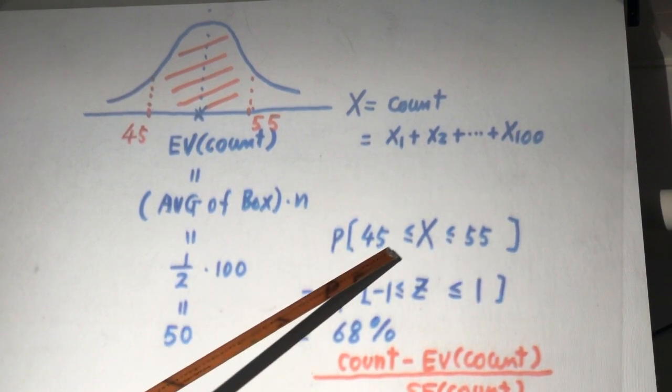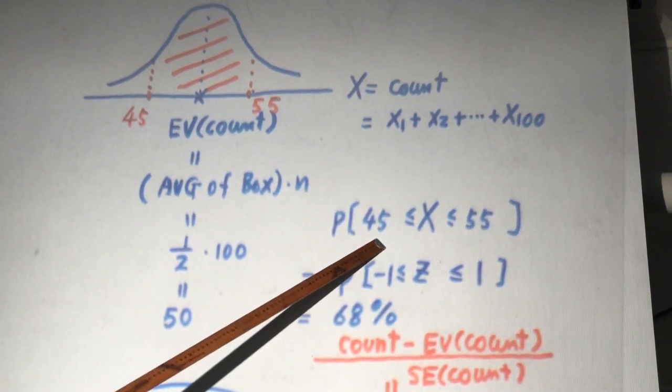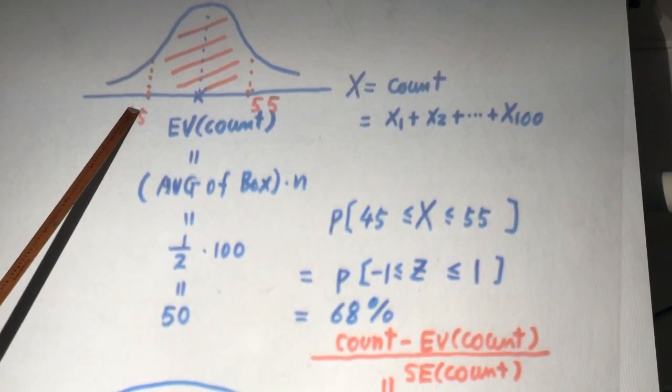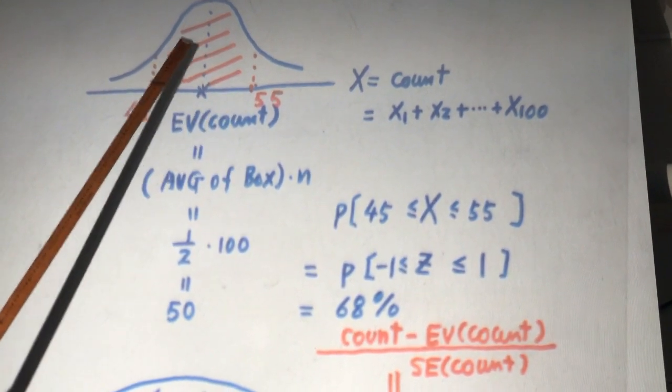And what's the probability we're looking for? The sample count is between 45 and 55. From 45 to 55. In order to find the size of the shaded area, we need to standardize the sample count.